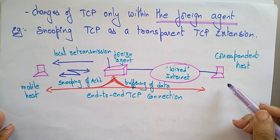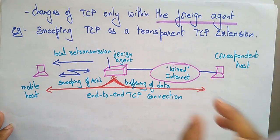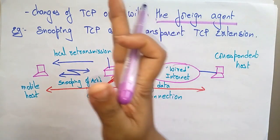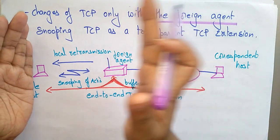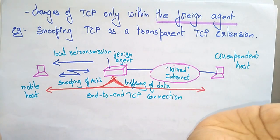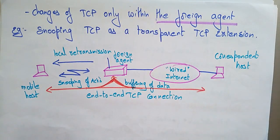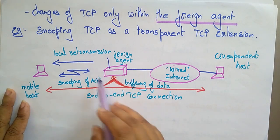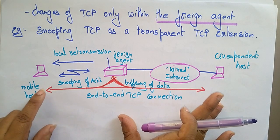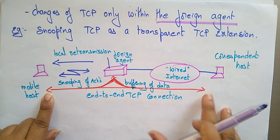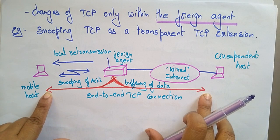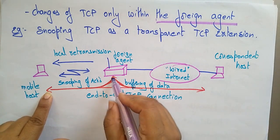Let's look at an example. Here we have the correspondent host (CN), which is connected via the wide internet to the foreign agent. The mobile host is connected to the foreign agent. This is how the snooping of acknowledgements is established. In the foreign agent, buffering of data takes place, and an end-to-end TCP connection exists between the mobile host and the correspondent host.